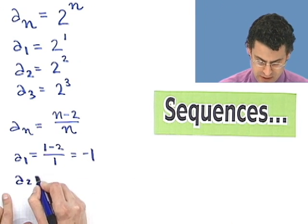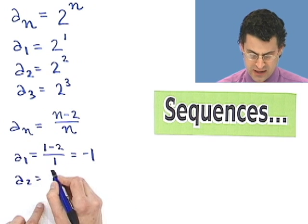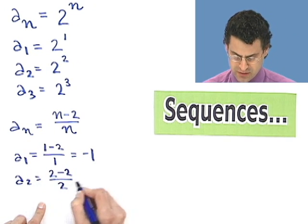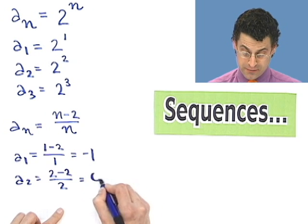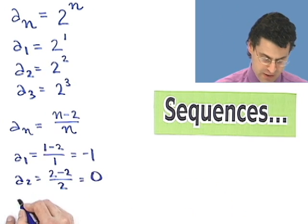What's a sub 2? a sub 2, I plug in 2 for n, so I see 2 minus 2 over 2. And what does that equal? Well, that equals 0. What about a sub 3?